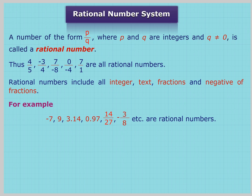For example, -7, 9, 3.14, 0.97, 14/27, -3/8, etc. are rational numbers.